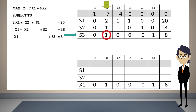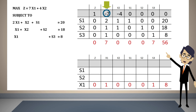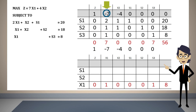For x1 to be basic in the third row, its coefficient in that row must be one and must have zero coefficients in all other rows. This means the values of minus seven, two, and one that appear in this column must be transformed to zeros. To convert minus seven to zero, we multiply the pivot row by seven and add it to the objective function row: 0+1, 7−7, 0−4, 0+0, 0+0, 7+0, and 56+0.